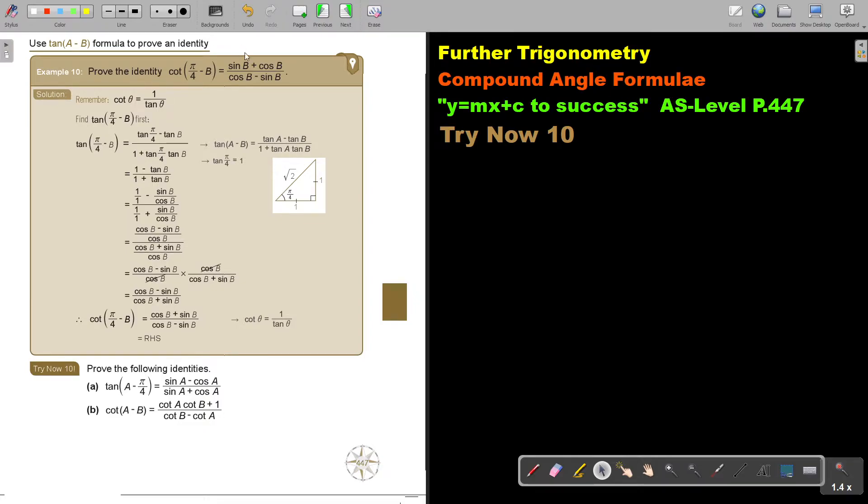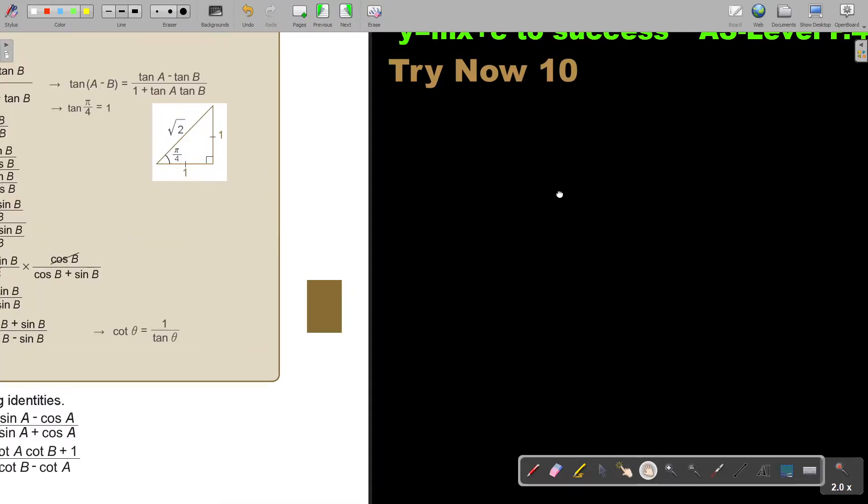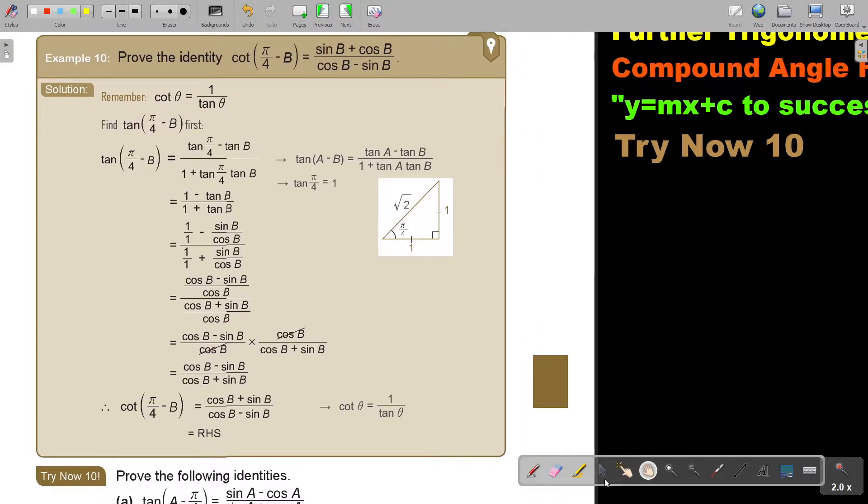Now, let's continue with another example of the tan compound formula. And we're going to show you an identity. I'm going to make it a bit bigger that you see better. So we'll ask you, prove the identity. We're going to work on this left-hand side. So remember that cot theta is 1 over tan theta. But to work with that fraction the whole time will make it difficult.